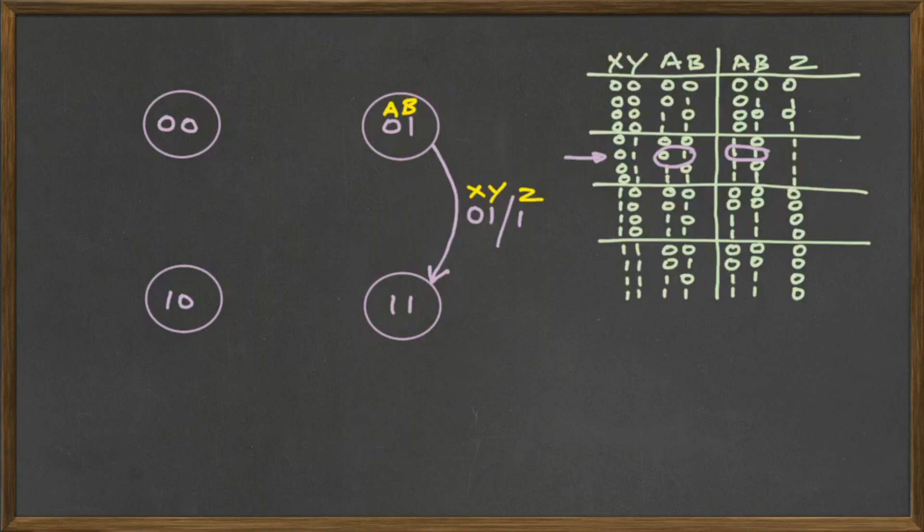Every arc connecting two states has to have an arrow showing the direction of the transition of the state at the next clock pulse. Now, on the arc, we write the state of the inputs and the outputs separated by a slash line as shown.